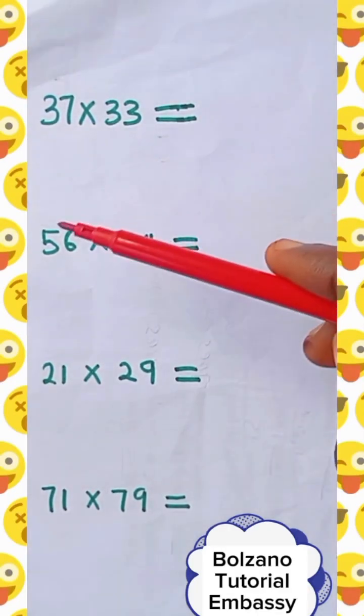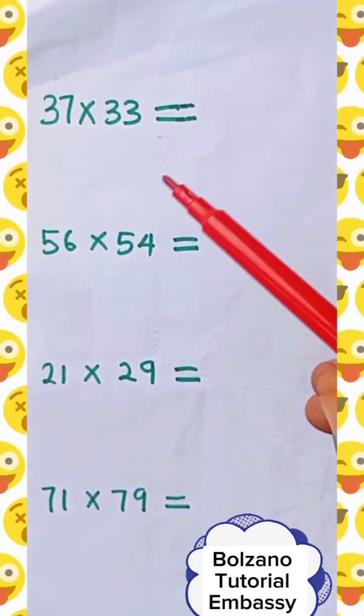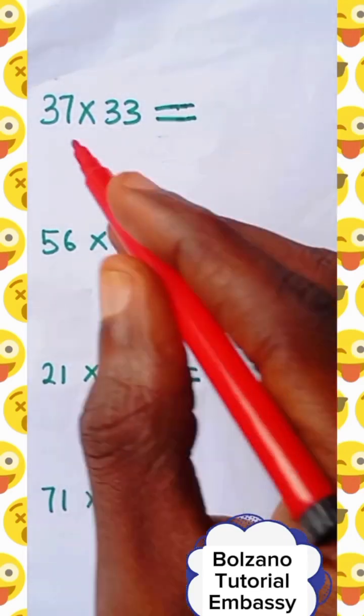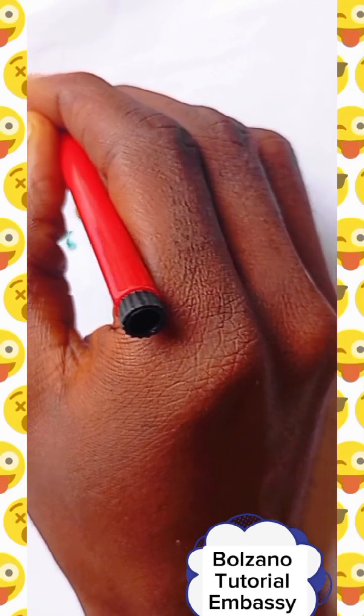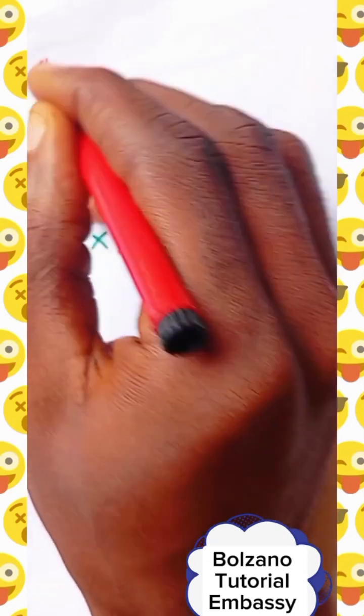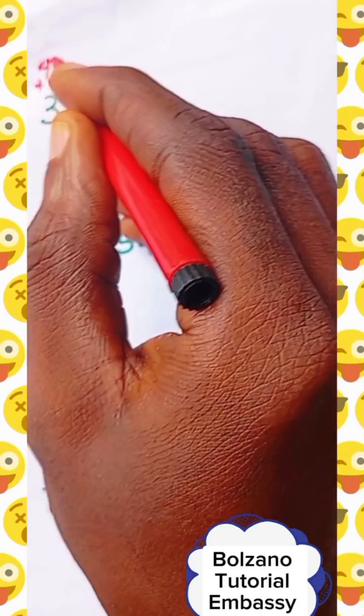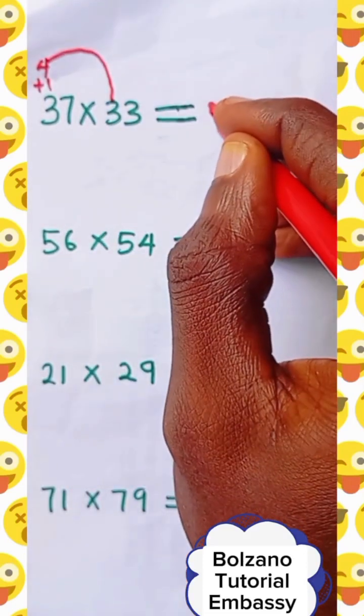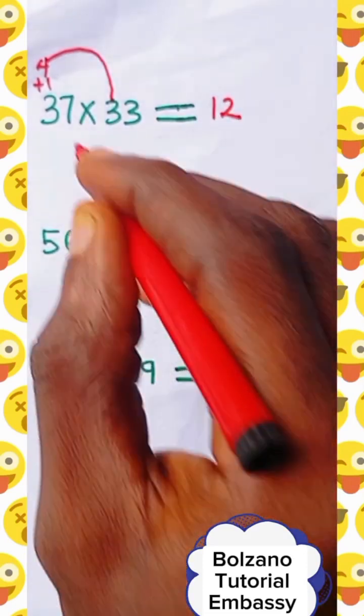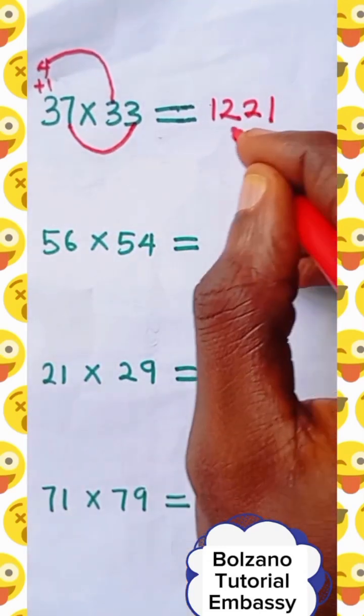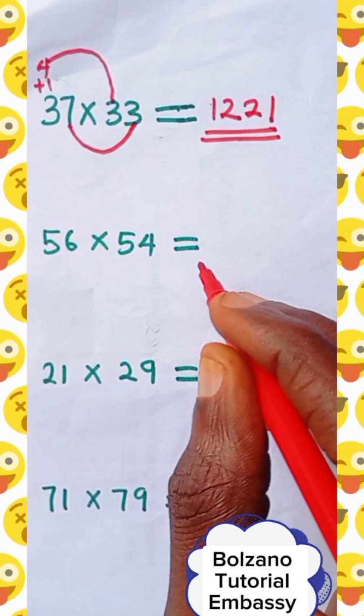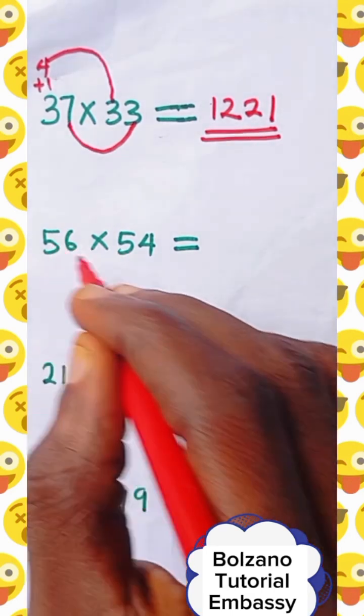We're asked to multiply these numbers, so let's quickly apply this trick in multiplication. 37 times 33. What you do is add 1 to this 3, you have 4, then you do 4 times 3, which equals 12. Next, multiply this 7 by 3, we have 21. So the answer is 1221. And do the same thing here.